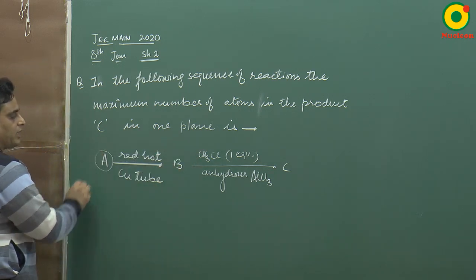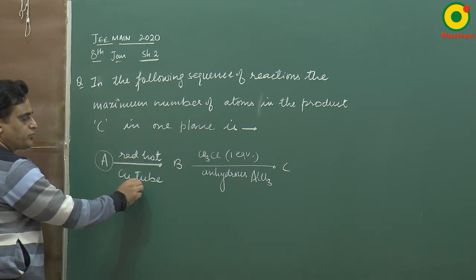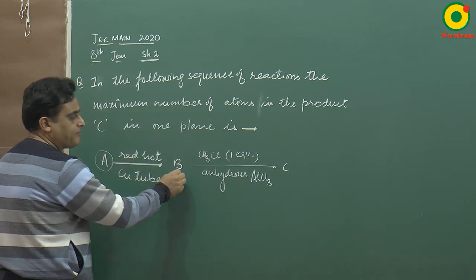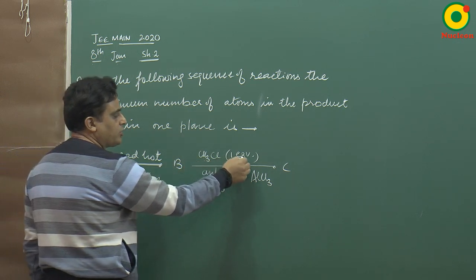Compound A is passed through a red hot copper tube, then B is the product. B with one equivalent gives C.